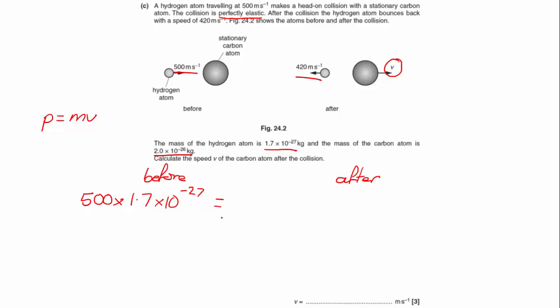That is going to equal the momentum afterwards. We've got to be a little bit careful here because the momentum of our hydrogen atom afterwards is in the opposite direction. So we must put in our minus sign to give us minus 420 multiplied by the mass, 1.7 times 10 to the minus 27. And now we've got to deal with the momentum of the carbon atom. So that's 2 times 10 to the minus 26 multiplied by v.